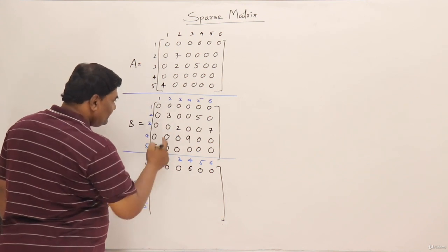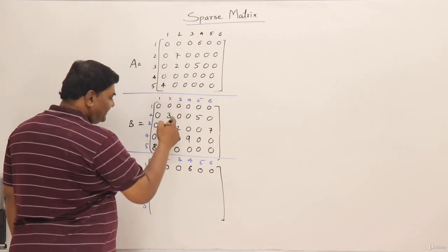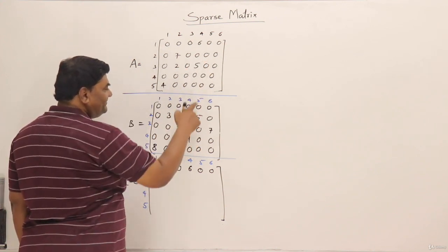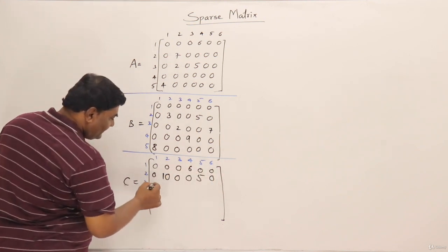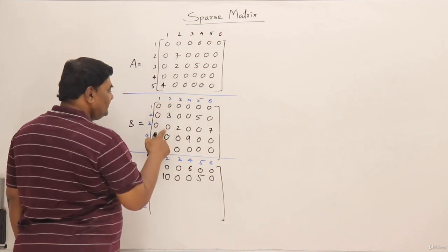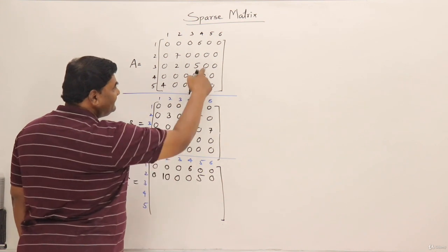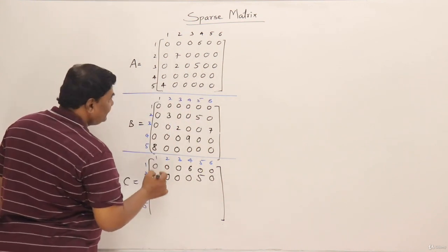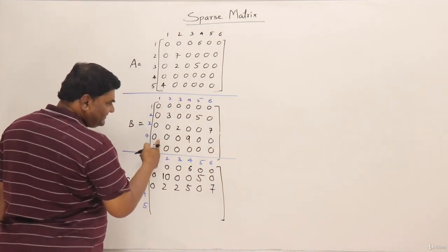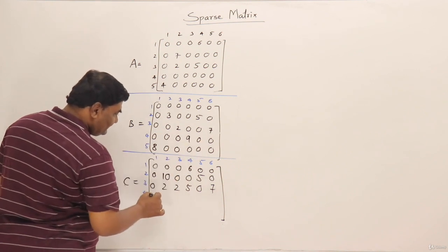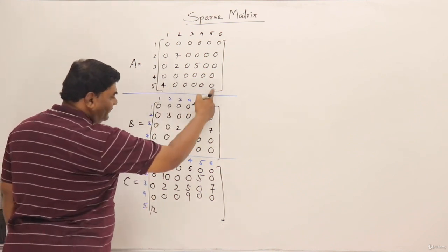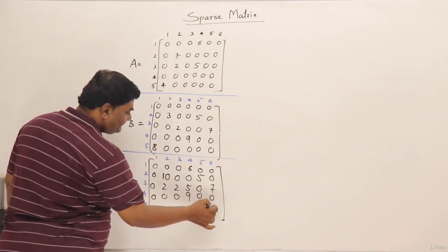In the second row, we have a nonzero element in both A and B at the same index i and j, so 7 plus 3 becomes 10. The next element is 0 in A but nonzero in B, so it will be just 5. Third row: 2 plus 0 is 2, 5 plus 0 is 5, 0, then 7. So the third row gives 0, 2, 2, 5, 0, 7. Fourth row has all zeros in A, so adding gives the same elements from B: 0, 0, 0, 0, 9, 0. Last row: 4 in A and 8 in B gives 12, rest are zeros.